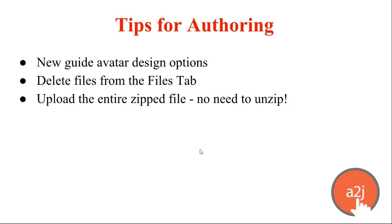A new thing that I started last month are tips for authoring. These are things that authors have asked me about or have come up in my email or conversations with authors over the past month, and I thought they would be helpful to share with you all as new or continuing authors. The first two tips I'm going to show you in A to J Author in a second. The third tip is about conversions — authors have been doing a lot of converting from A to J 4 to A to J 6, or new authors have been coming on board working with guided interviews that other people worked on in the past.